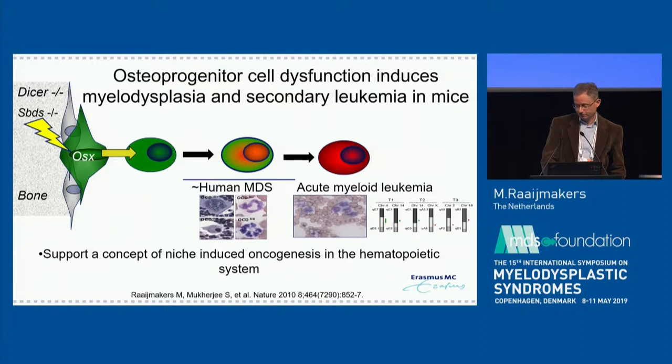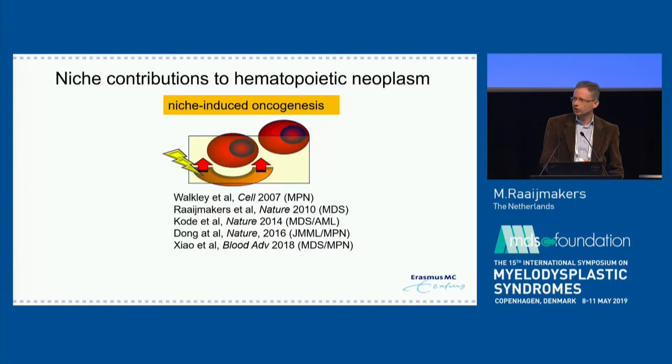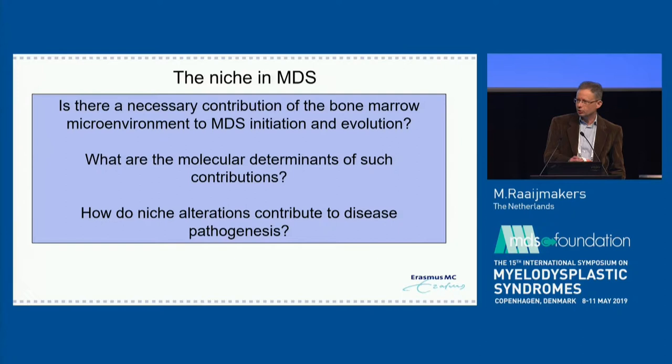This has been recapitulated in several mouse models now — that if you change the microenvironment, you can actually induce neoplastic disease. This really raises questions, and I've summarized some of them. Is there indeed a necessary contribution of the microenvironment to MDS initiation and evolution? If so, what are the molecular determinants of such contributions? And how do these alterations contribute to MDS pathogenesis?